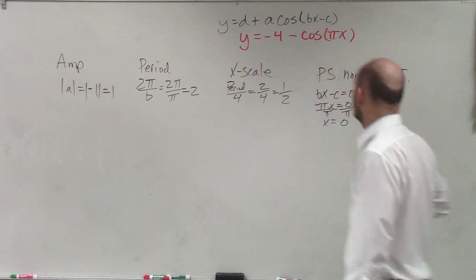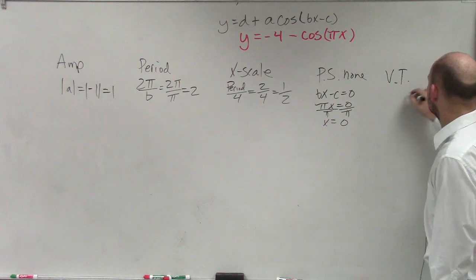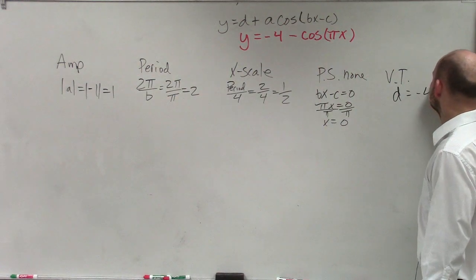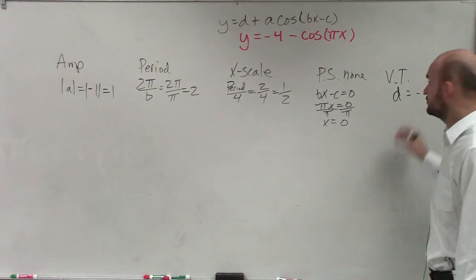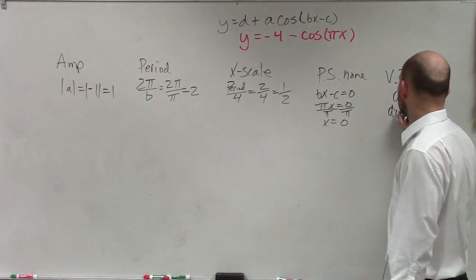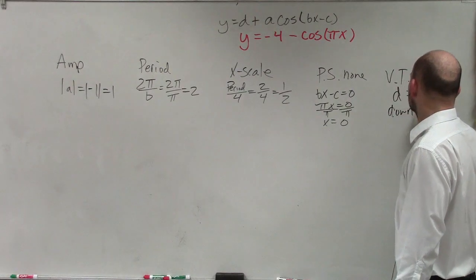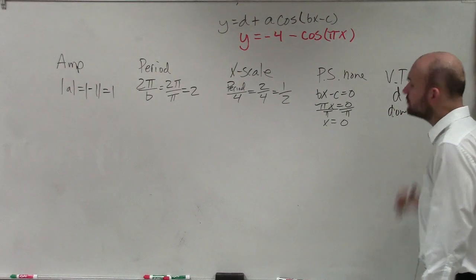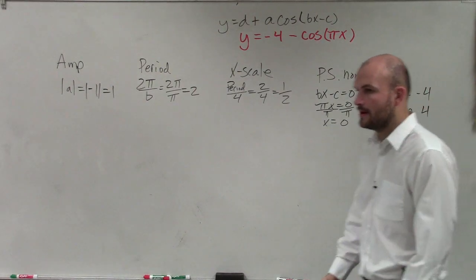Our vertical transformation is d, which in this case is negative 4. So therefore, we're going to shift down 4.